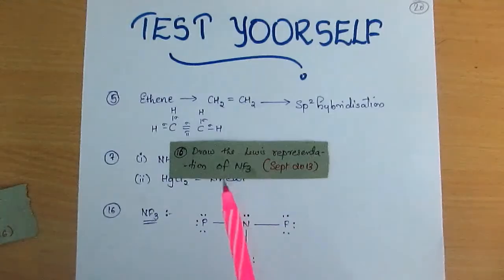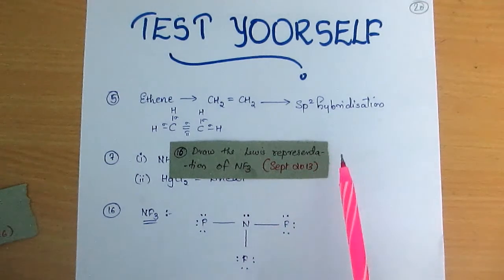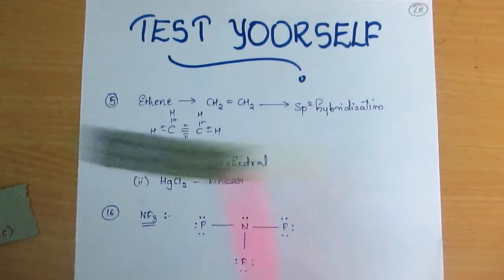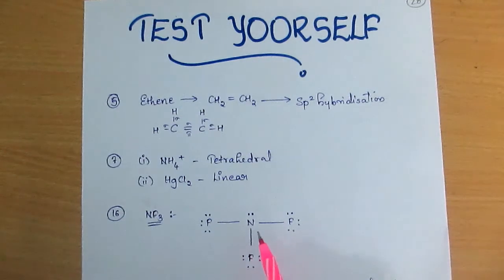The 16th question, asked in September 2013: draw the Lewis representation of NF3. The Lewis structure of NF3 is shown here.